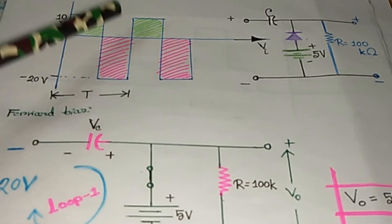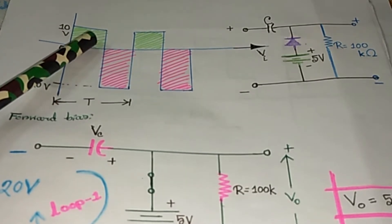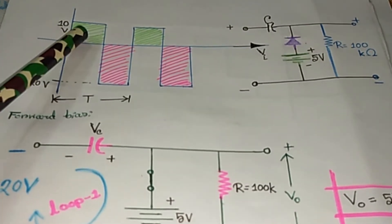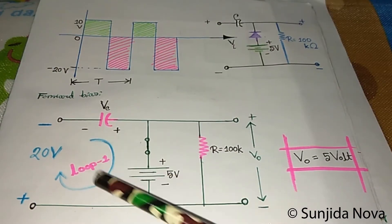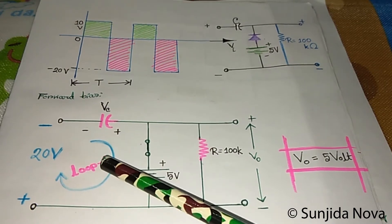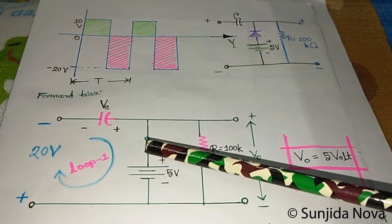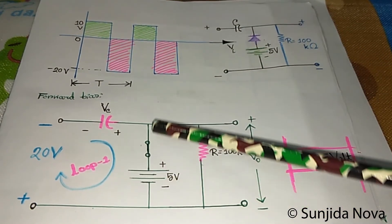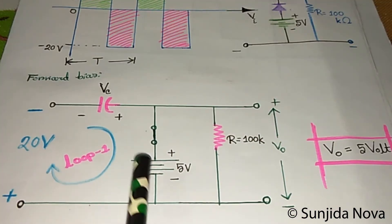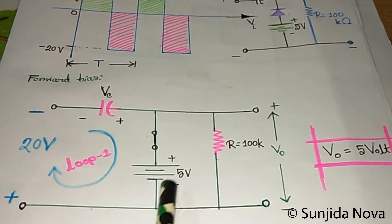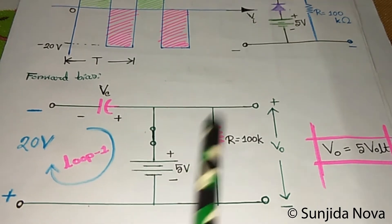That means we first consider the negative half cycle, and we skip the positive half cycle for now. So we can draw the diagram first in this way. Since the diode is forward biased, it acts as a short circuit. So we short it and look carefully at the circuit diagram.